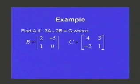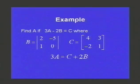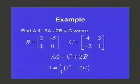To find A, the easiest way is to solve for A in that equation. So take your 3A out, so that you'd have 3A equal to C plus 2B. In other words, add 2B to each side of that equation. Then divide by 3, which is the same as multiplying by 1 third.